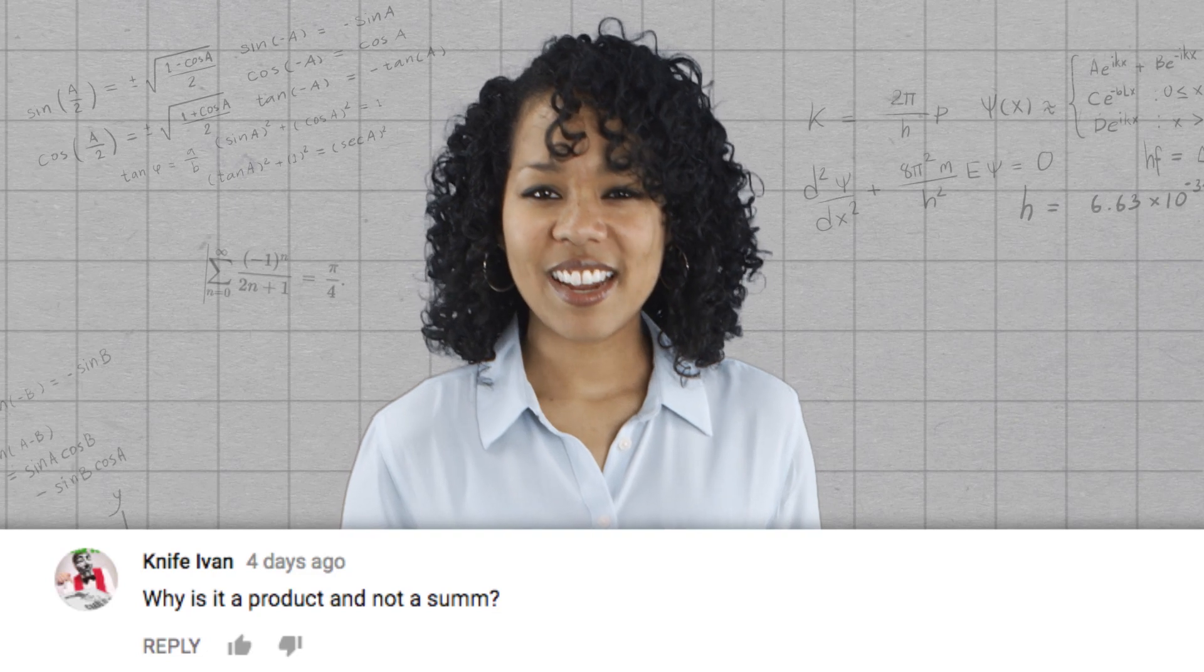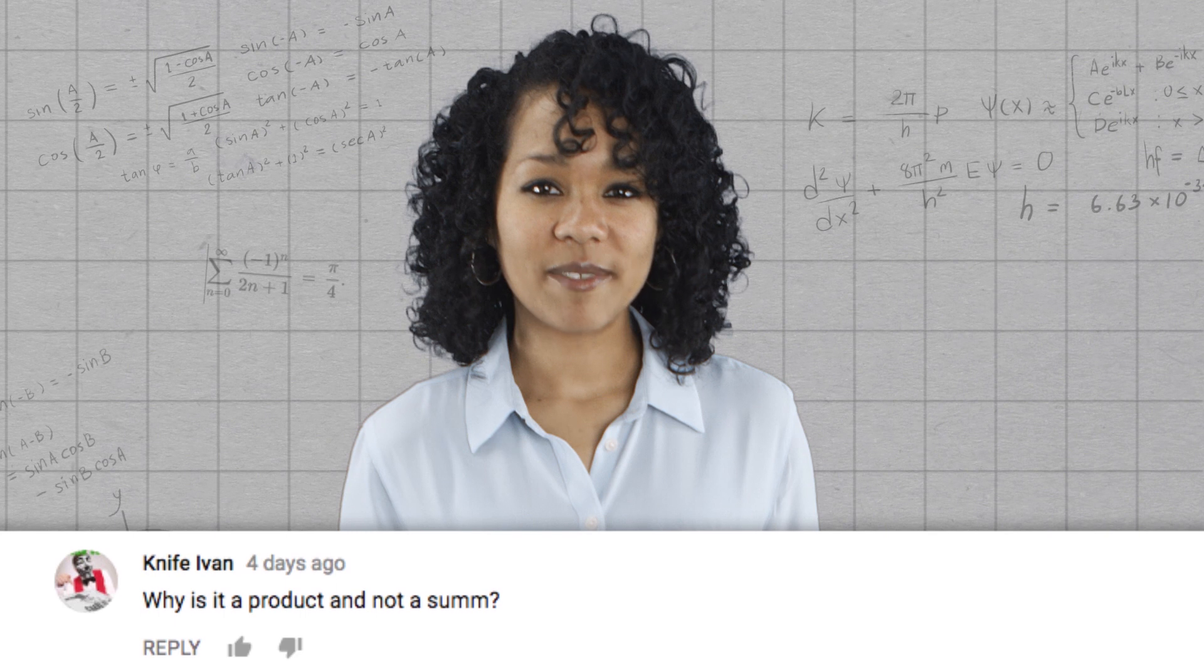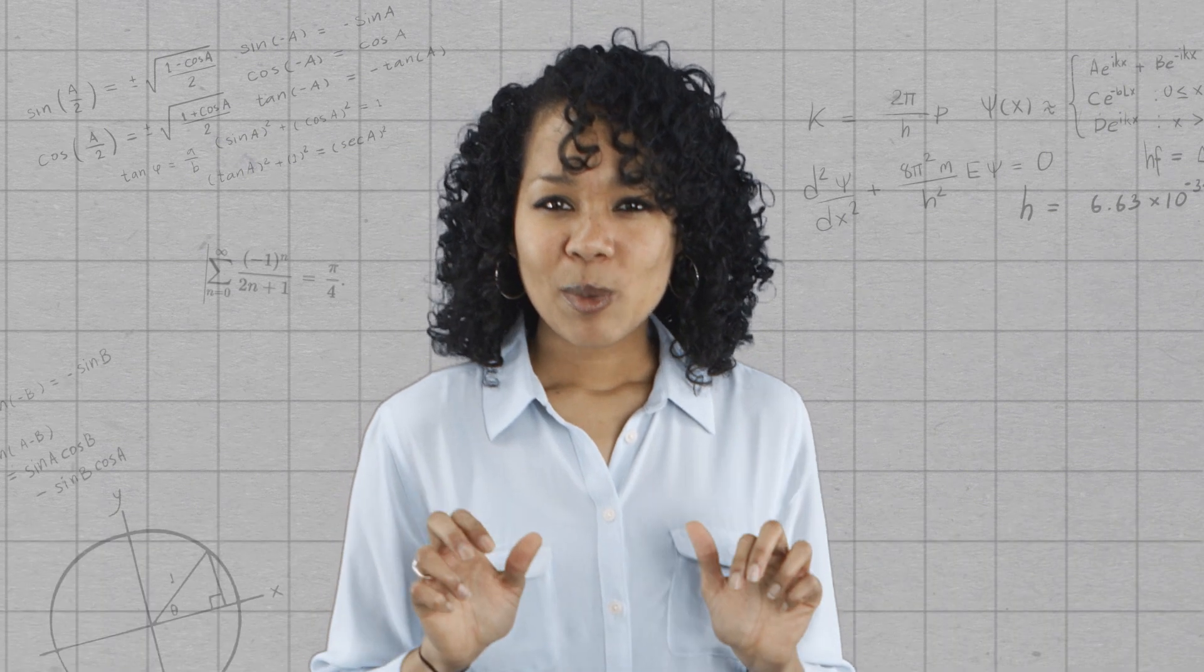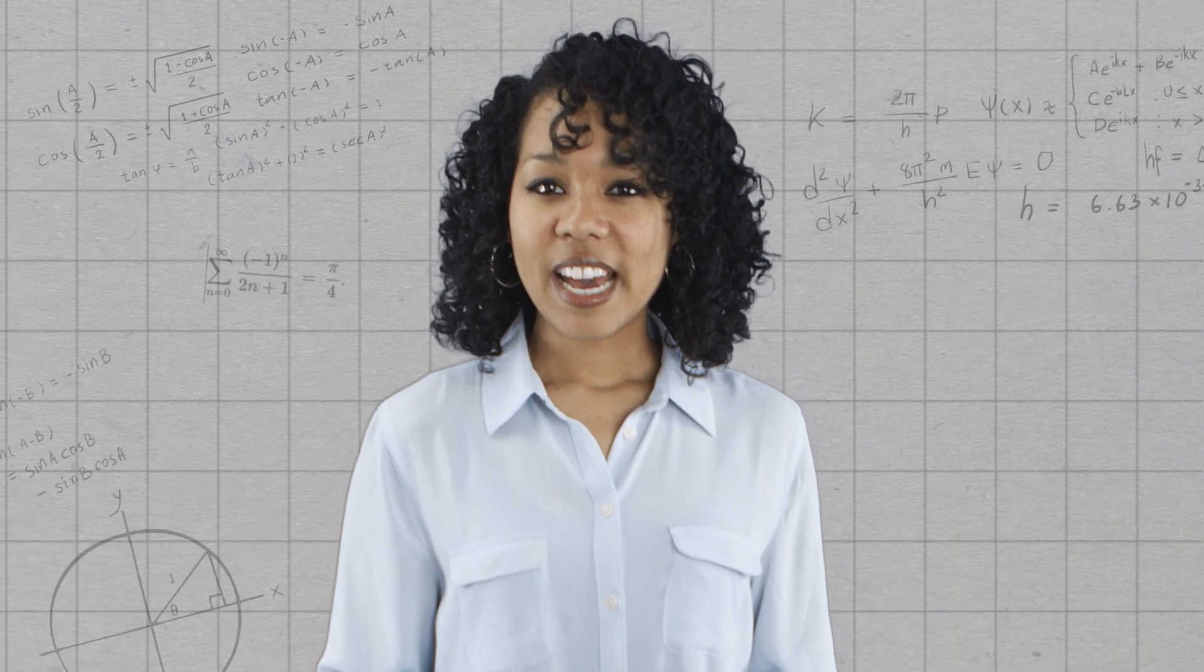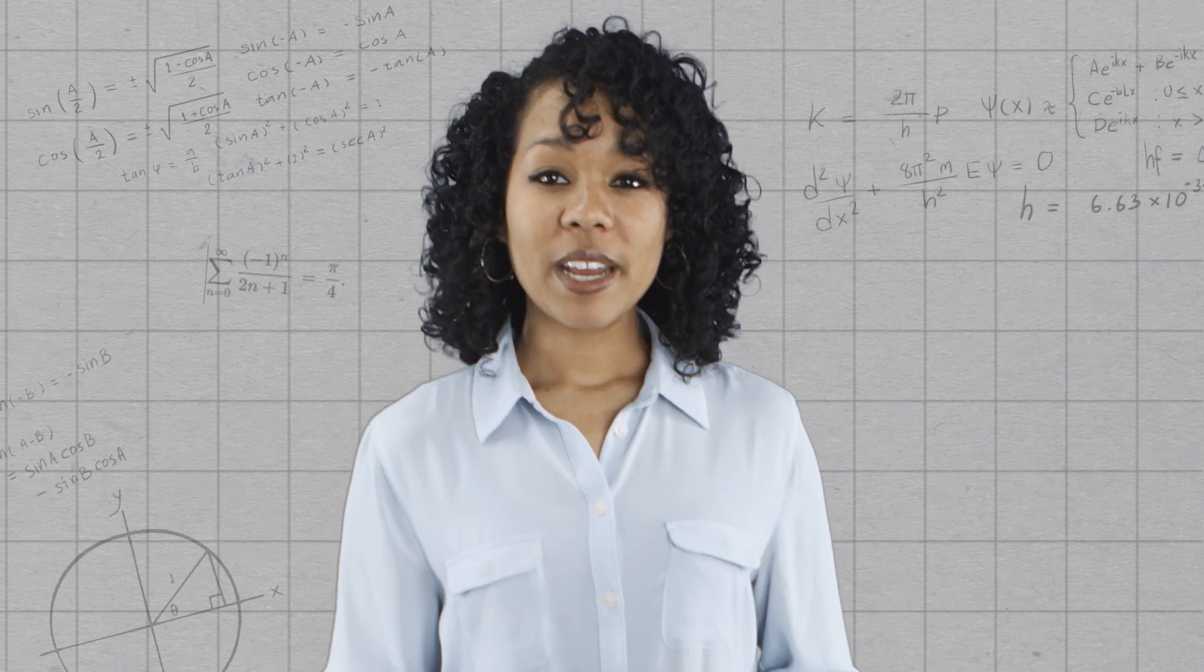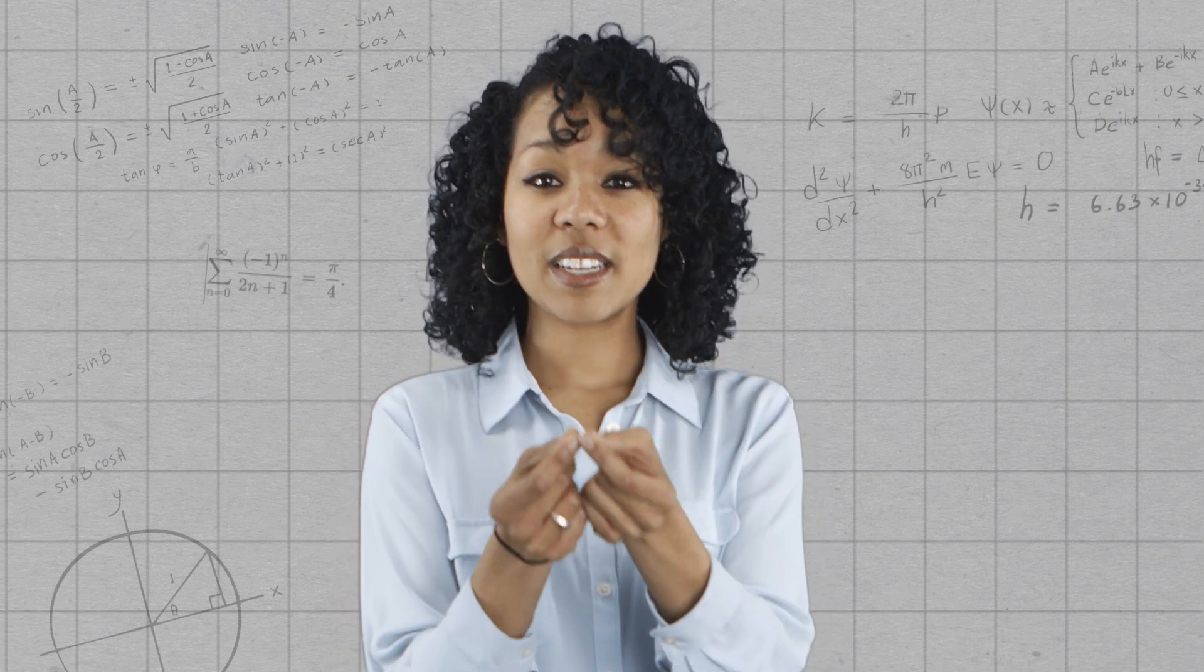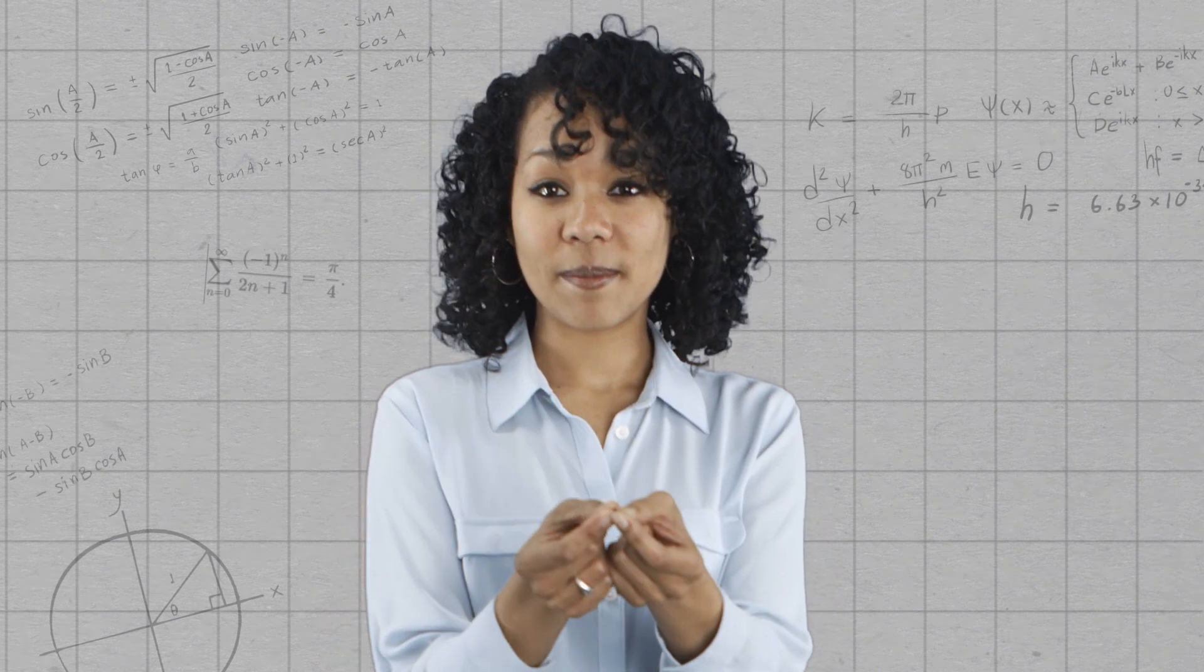Many of you, like Knife Ivan, wondered why we call loop concatenation a product or multiplication, rather than a sum or addition. Really, we're using the word multiplication a bit loosely. Technically, loop concatenation is an example of a binary operation. A binary operation is a way to take two elements in a set and combine them to get a third element in that set.